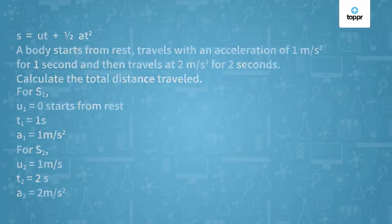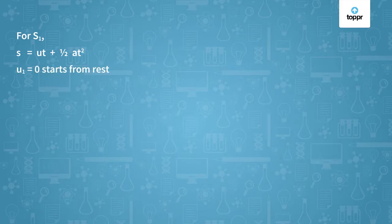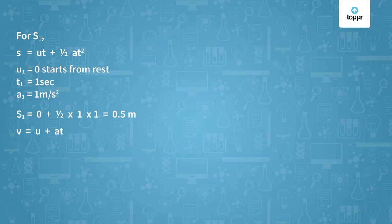Let's look at these two scenarios closely. In scenario 1, we use the formula S equals UT plus half AT² to calculate the distance. The initial velocity U is zero because it starts from rest, time taken is 1 second, and acceleration is 1 meter per second squared. Filling these values in, S1 comes out to be 0.5 meters. We also calculate the final velocity using V equals U plus AT, which comes out to be 1 meter per second — this will be the initial velocity for scenario 2.